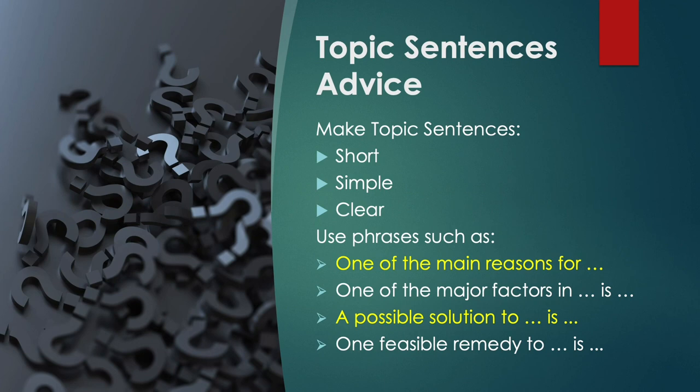Some advice about topic sentences: make them short, simple and clear. Make it easy for the reader to understand what you're saying. Use phrases such as these to introduce your topic sentences: 'One of the main reasons for,' 'One of the major factors in,' 'One of the strongest arguments against or in favour of,' 'One of the main advantages or disadvantages of.' These phrases can help you to structure your topic sentence in the essay.